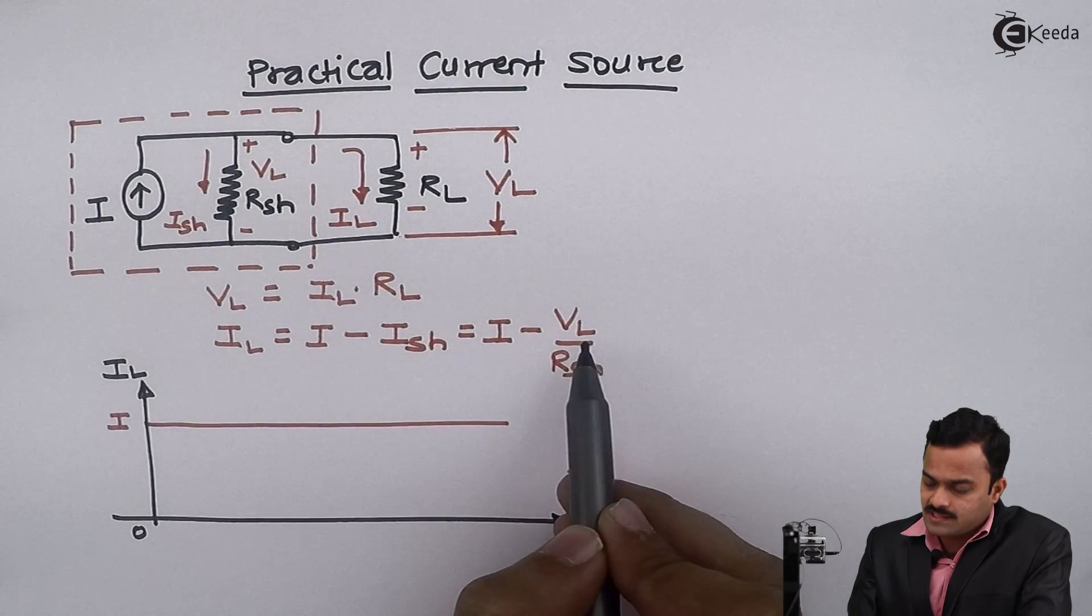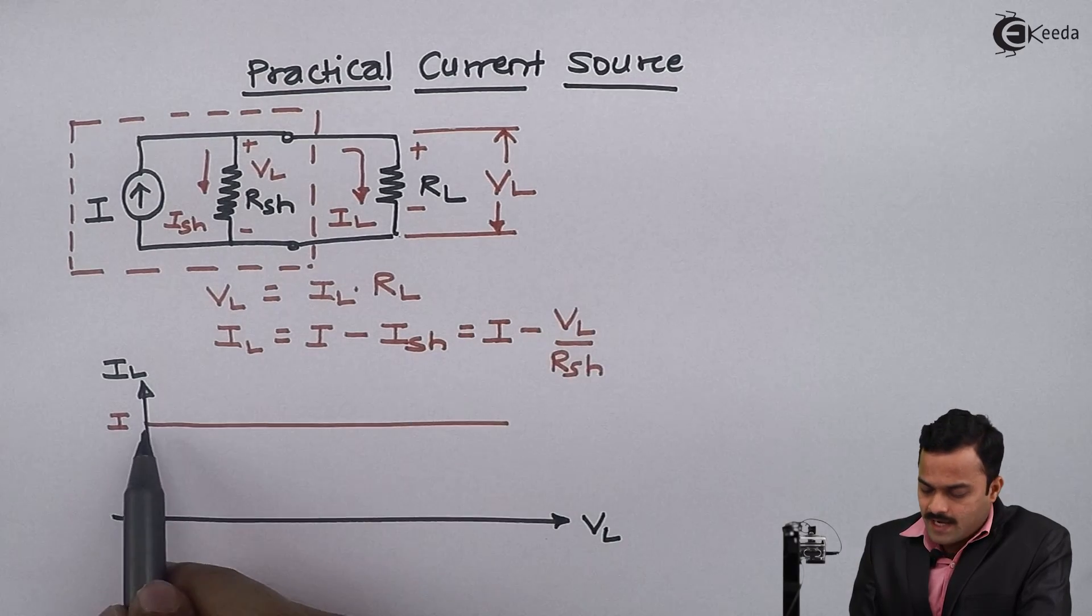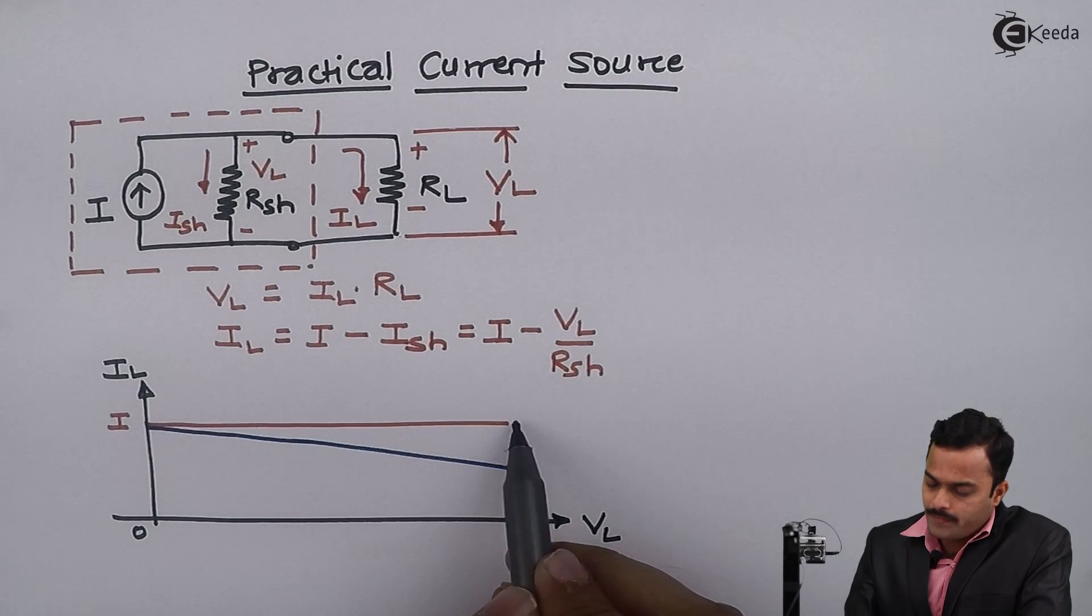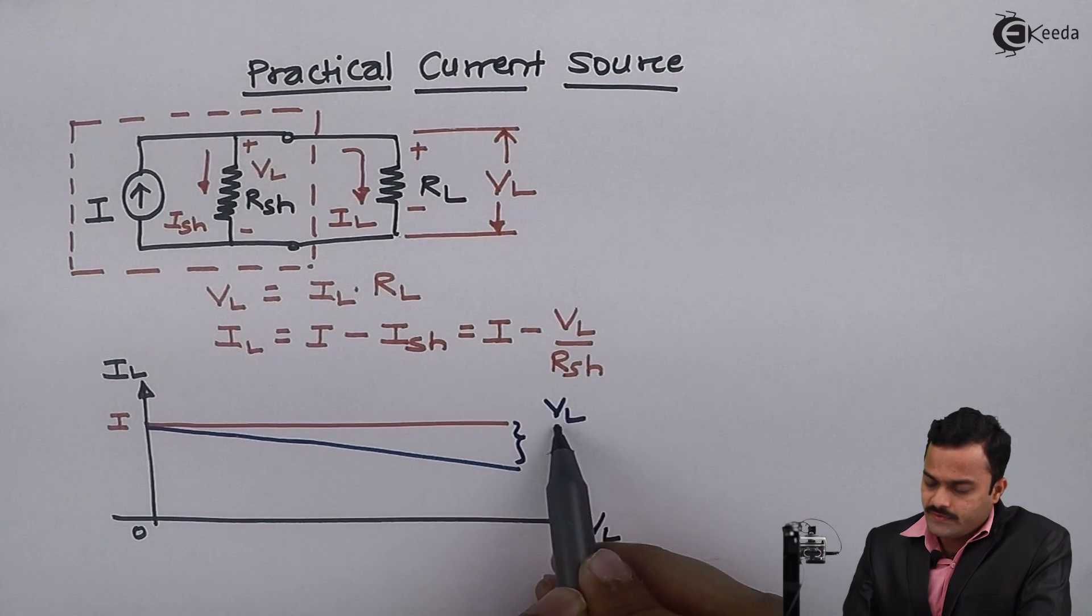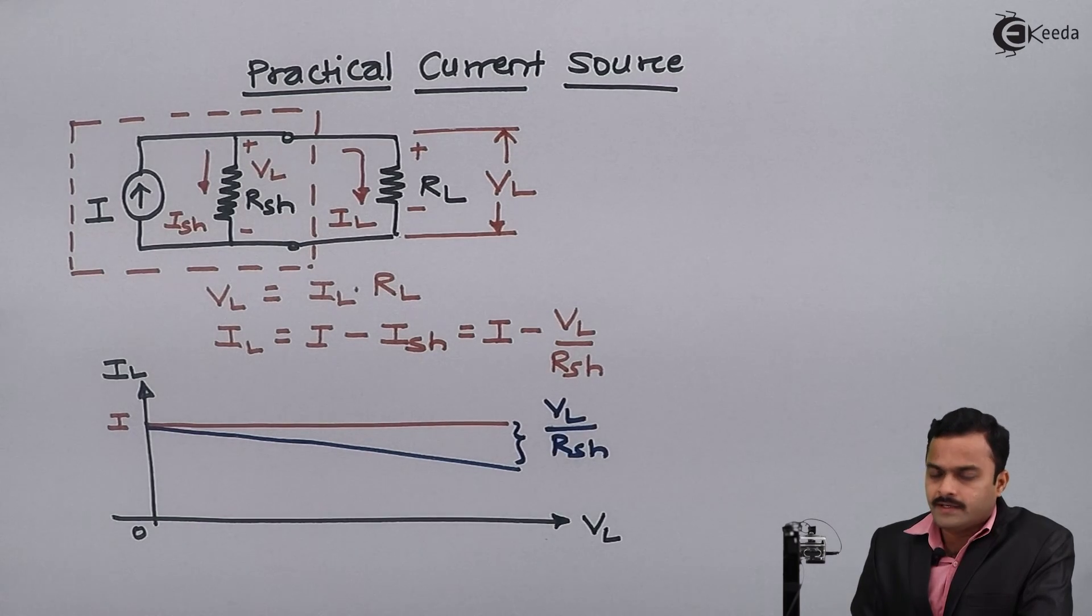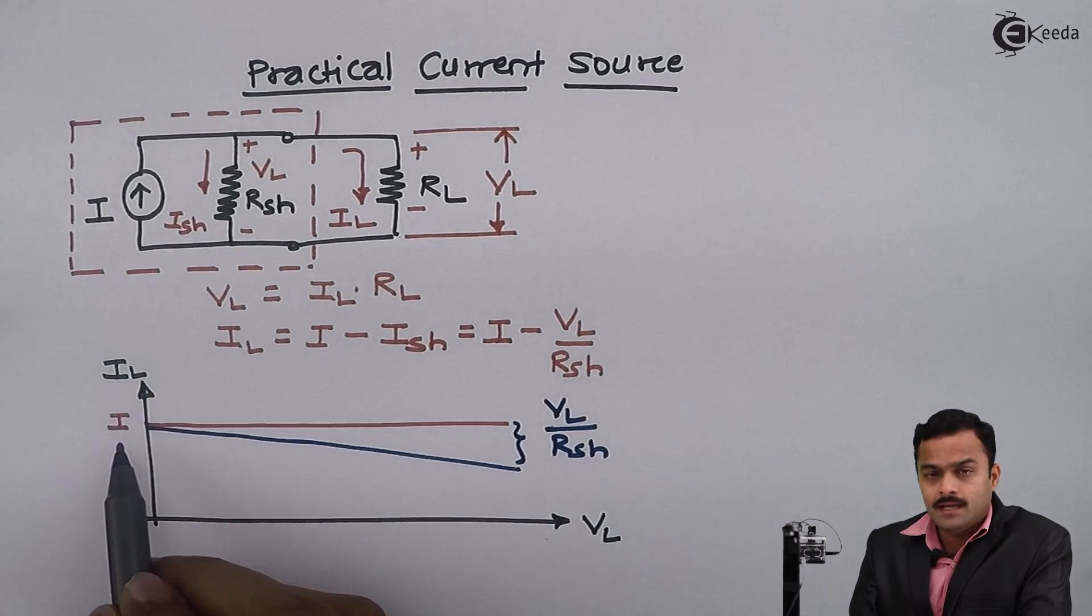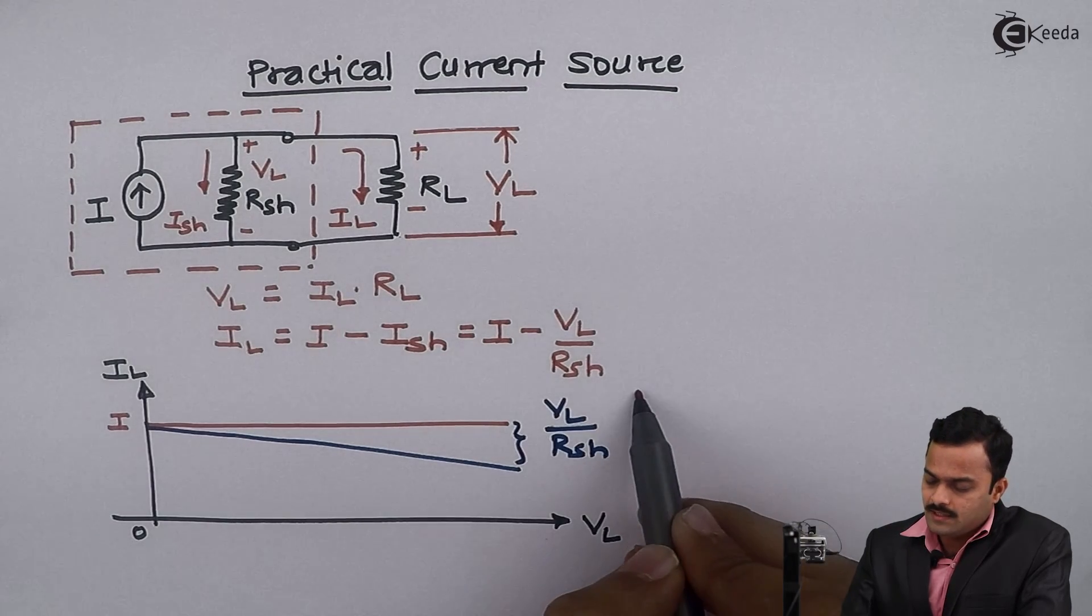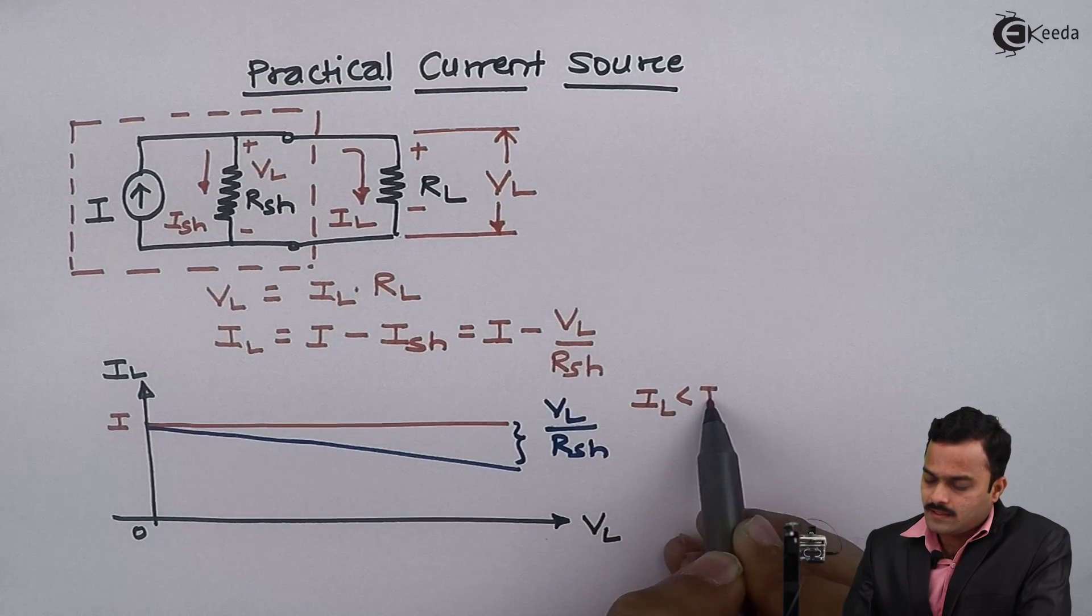not be same as I but some value we need to subtract from I, resulting characteristic like this. So there will be a drop in current and that drop in current is given by VL divided by Rsh. So depends on value of Rsh I can have the value of IL which is no longer same as I but it is always less than I. So IL will always be less than I.